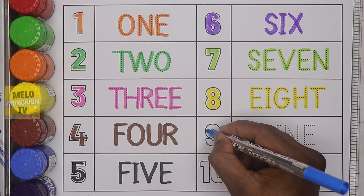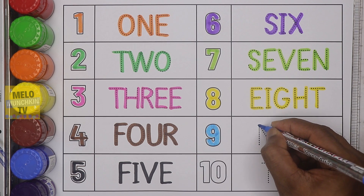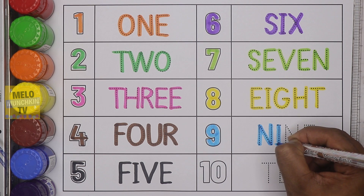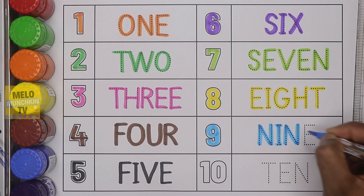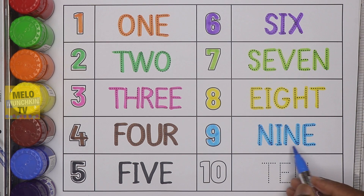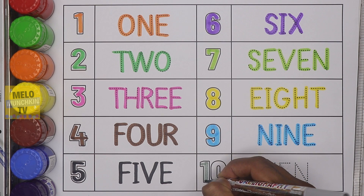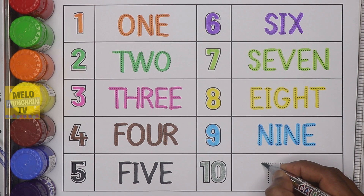Next, I'll take blue color and write number nine. This is number nine. The spelling is N-I-N-E, nine.